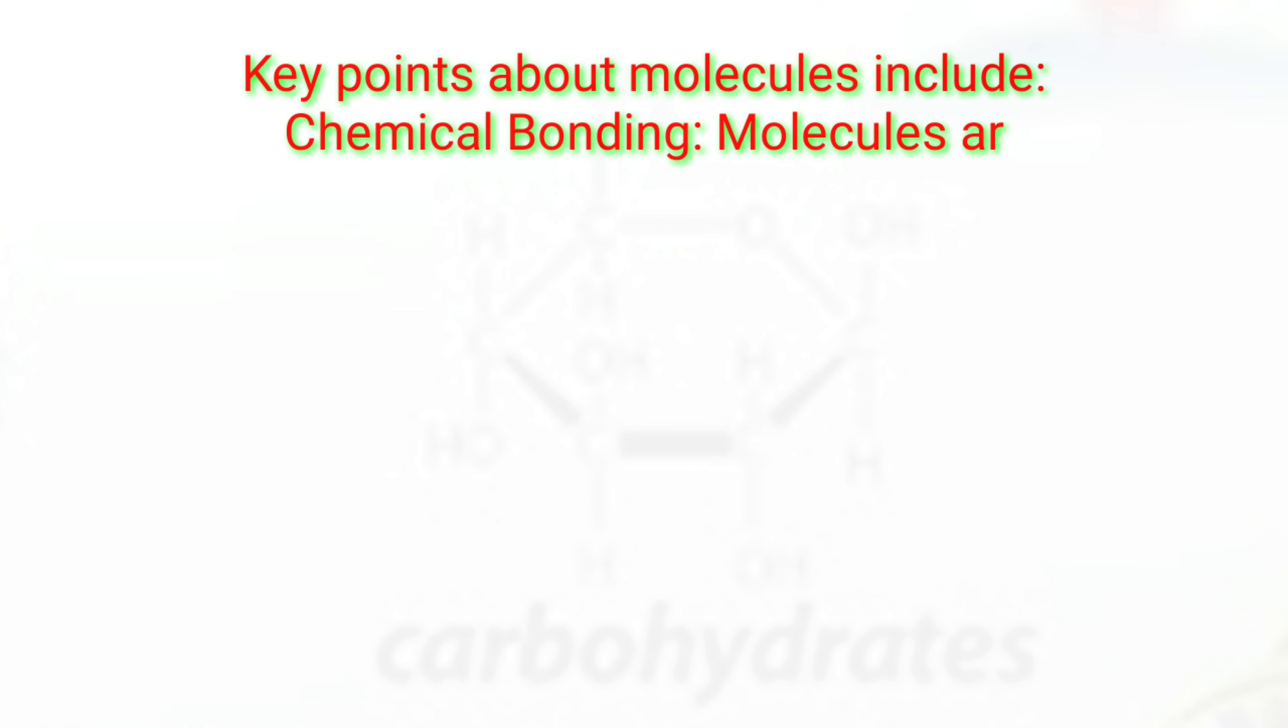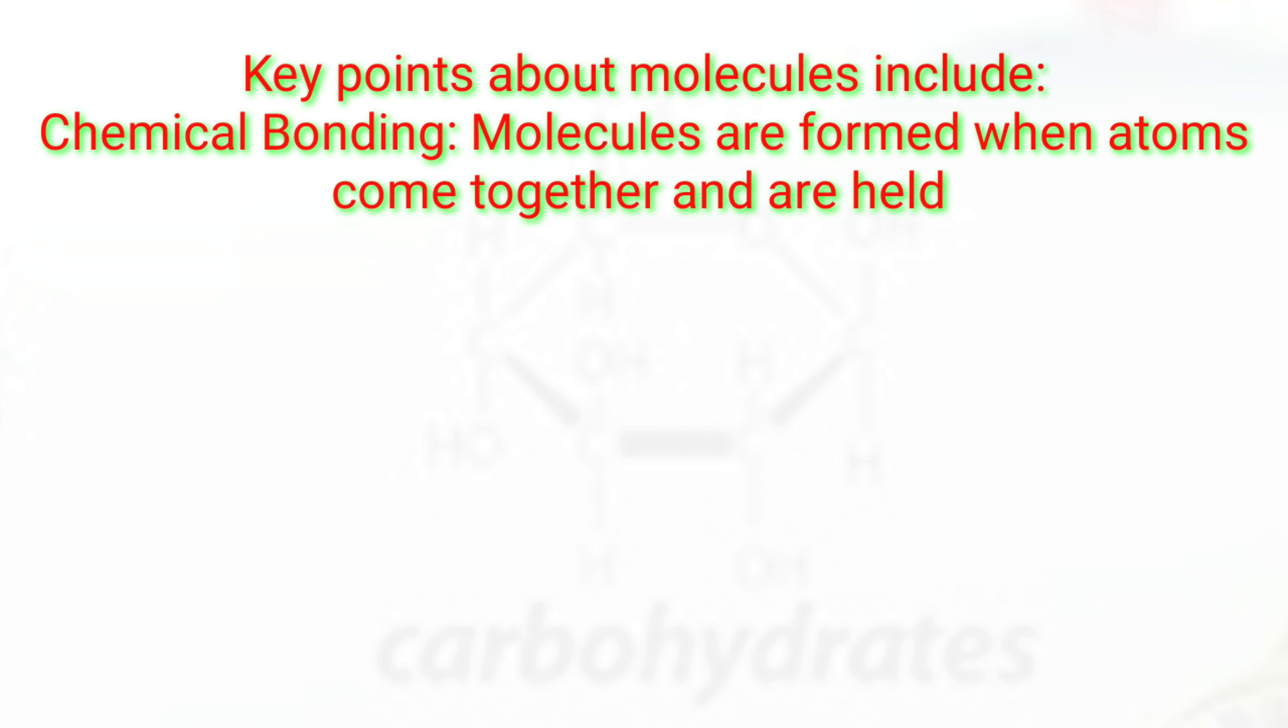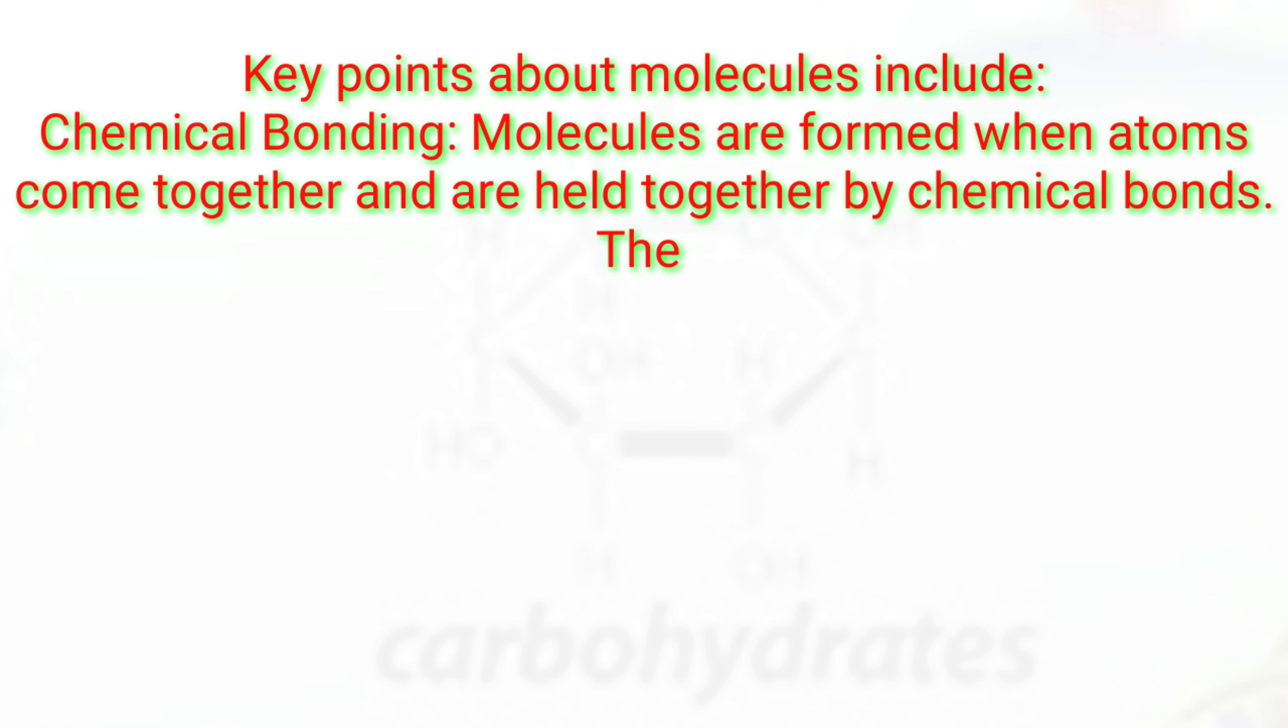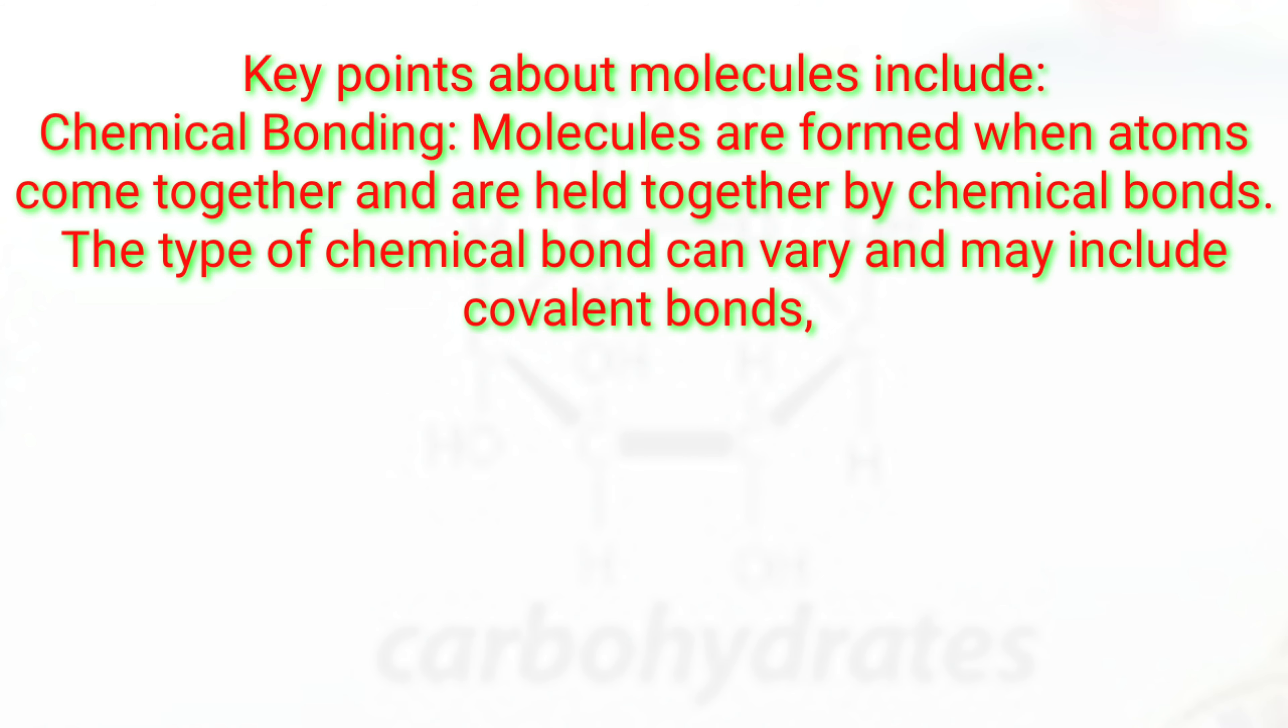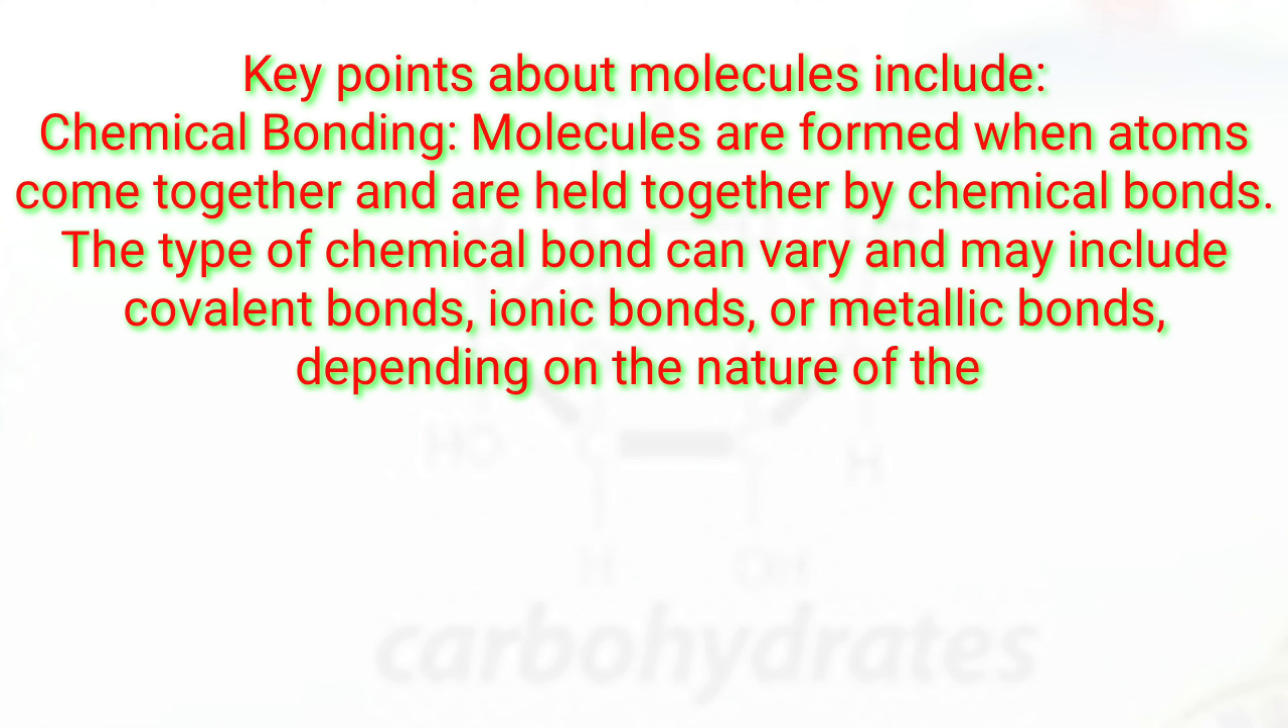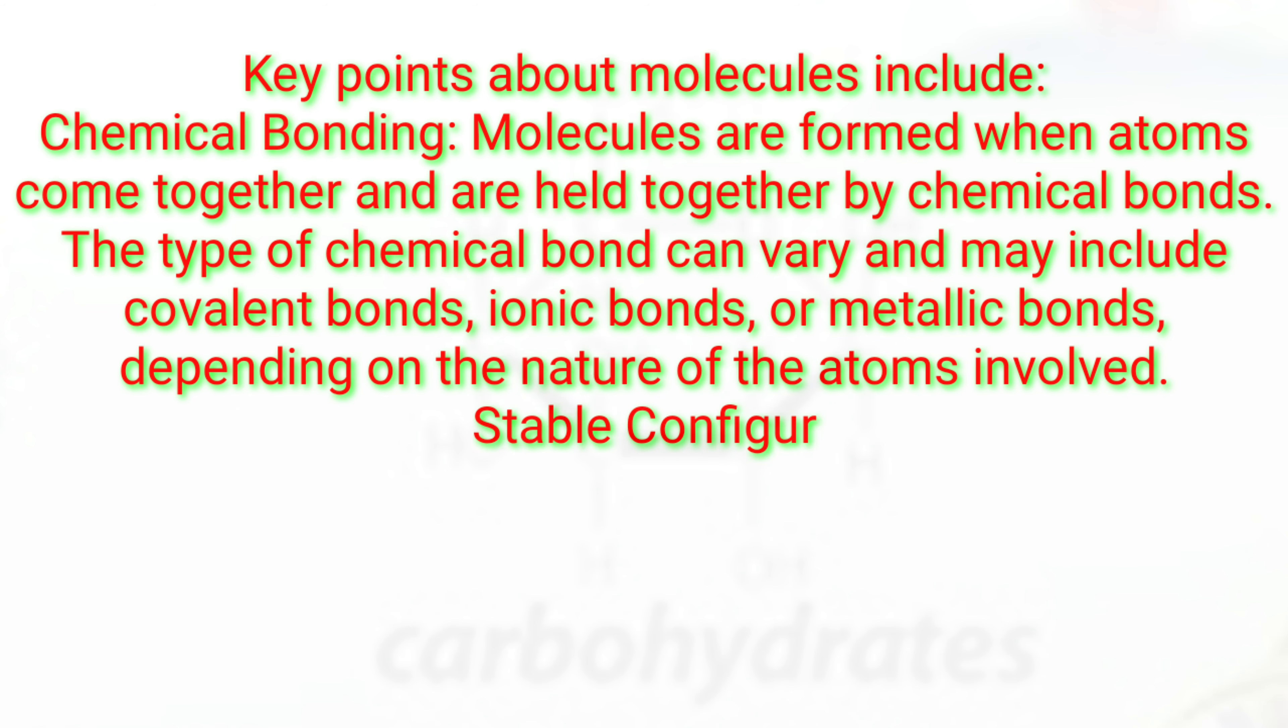Key points about molecules include chemical bonding. Molecules are formed when atoms come together and are held together by chemical bonds. The type of chemical bond can vary and may include covalent bonds, ionic bonds, or metallic bonds, depending on the nature of the atoms involved.